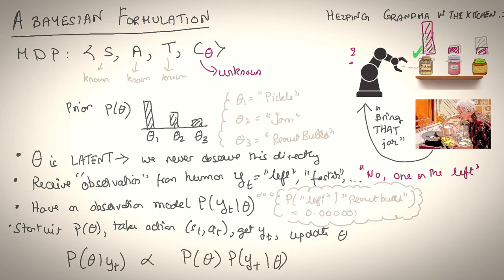So, the robot starts with a prior P(theta), takes an action a_t, gets an observation y_t, and updates theta. And this update of theta can be performed using Bayes' rule that essentially states the posterior probability P(theta | y_t) is proportional to the prior probability P(theta) times the observation model P(y_t | theta).